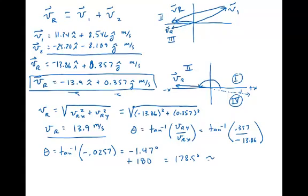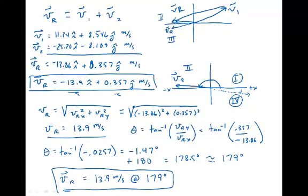So putting v sub r into polar form, we could say v sub r is 13.9 meters per second at an angle of 179 degrees. So this would be our other form of showing that resultant vector.